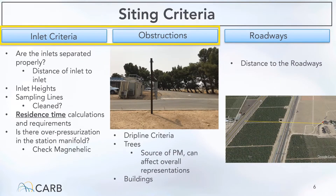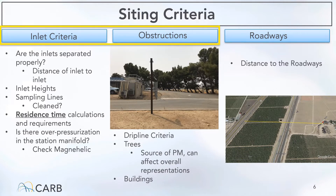The key aspects of siting criteria that are important to be aware about are inlet criteria, obstruction criteria, and distance to roadways. I'll focus on inlet and obstruction criteria for today. For inlet criteria, if you have plans on re-arranging your inlets, changing your sampling system, or finding other reasons that the position of your inlet will change, there are several questions you may want to ask yourself: are the inlets separated properly? What is your sampling height? How far is your candy cane inlet to the ground? Are your sampling lines clean and debris free?